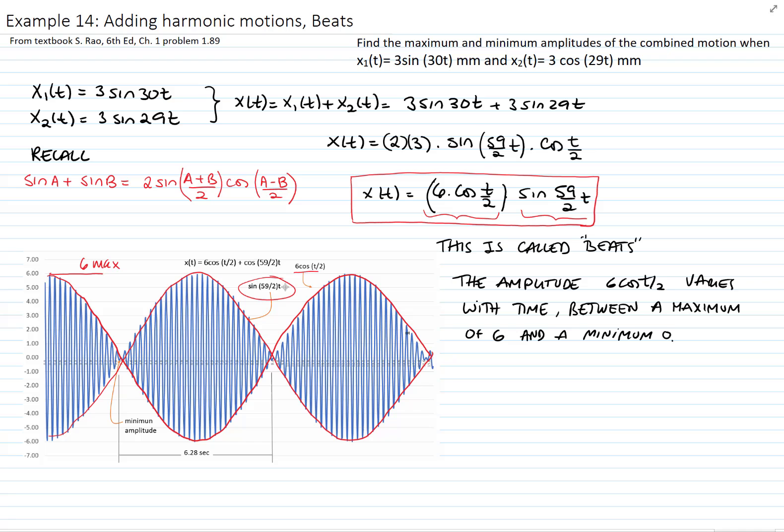The frequency that we will read in the graph is 2π over delta. Since delta is 1, which is the difference between the two frequencies, the period in this case is 2π, which is the 6.26 that you see in the graph. And then the frequency will be 2π over that period. And it means that it's 2π over 2π, which is then 1. So it's 1 radian per second.